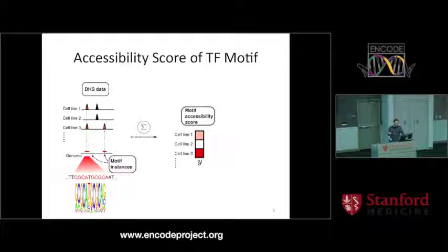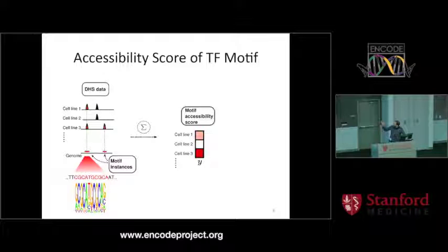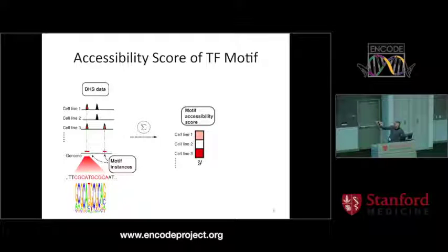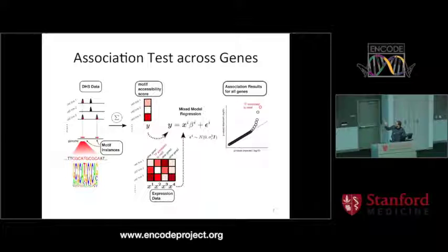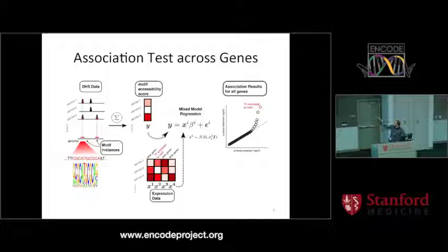First, what you want to have is a motif accessibility score. You collect all the motifs of a certain transcription factor in the genome and check the enrichment for this motif in the open chromatin regions of the various cell lines. In this example, cell line 3 has heavy enrichment for this motif in the DHS regions, while cell line 2 has very little. You then compare this to expression across different genes.